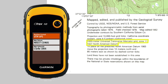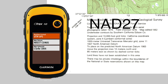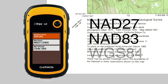Most maps of locations in the continental United States will use one of three map datums: NAD 27, NAD 83, or WGS 84. It's important that your GPS setting match the datum used by your map.